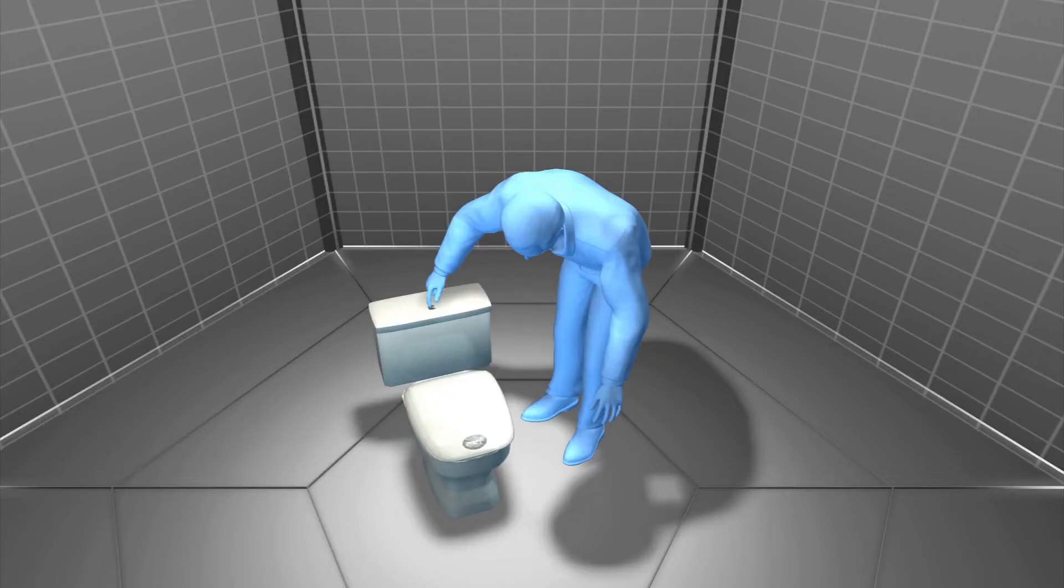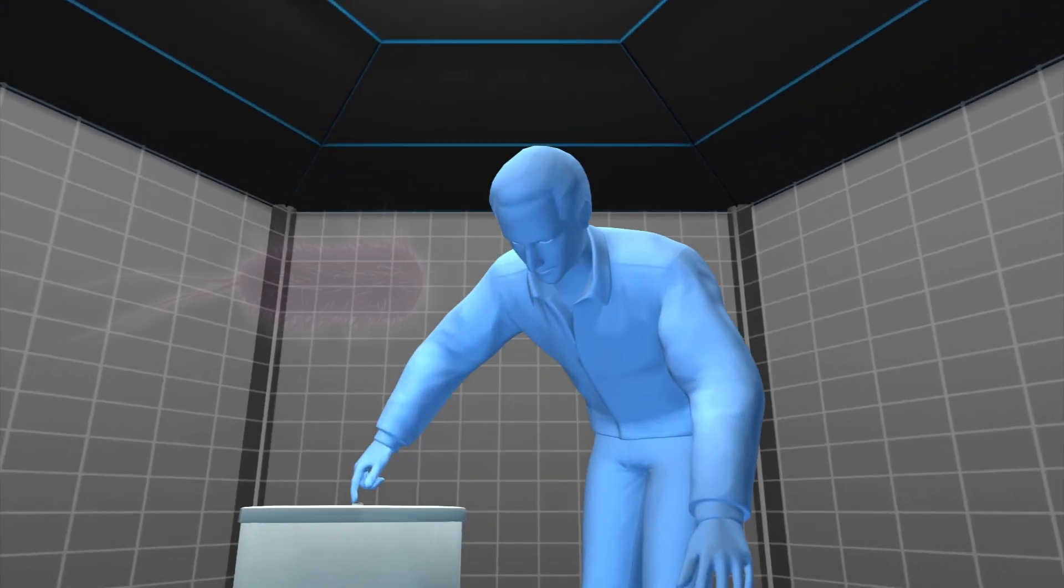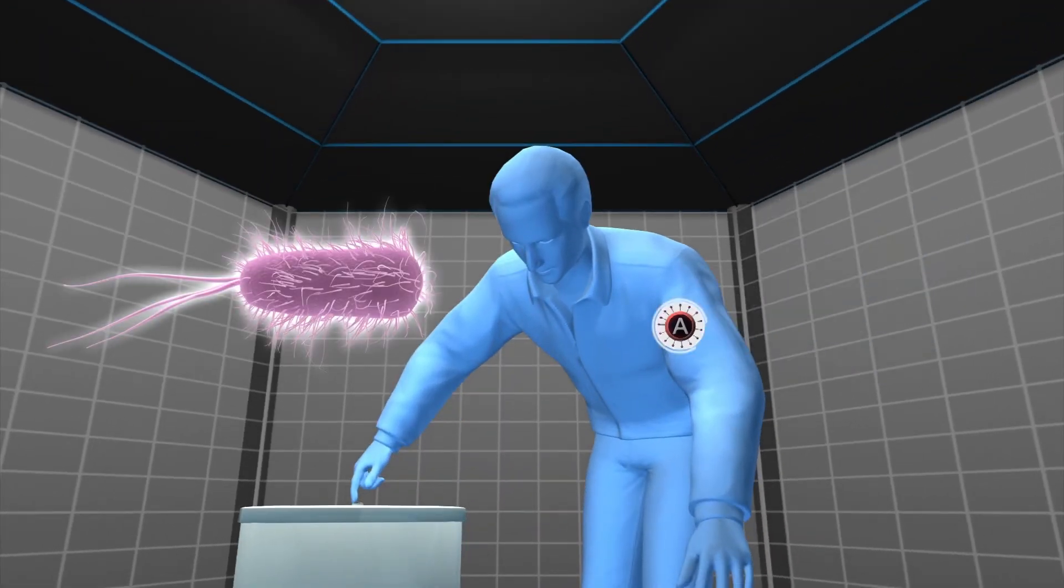According to the study published in the Journal of Clinical Investigation, a certain strain of E. coli is more likely to cause traveler's diarrhea in people with blood type A.